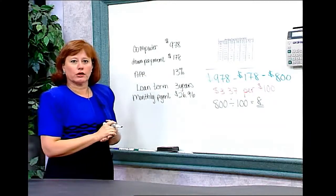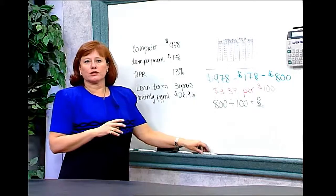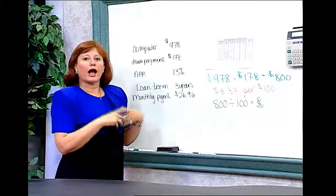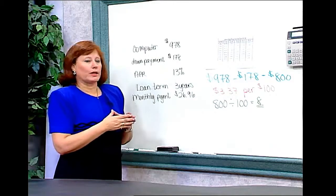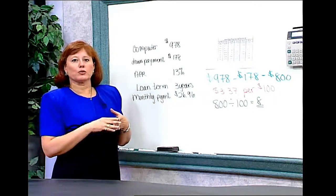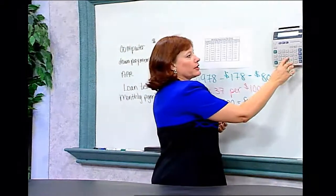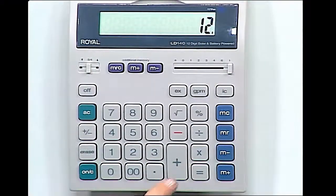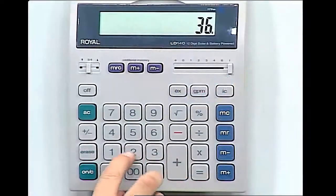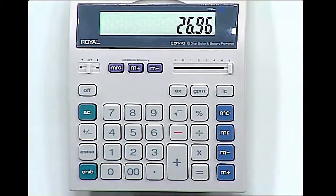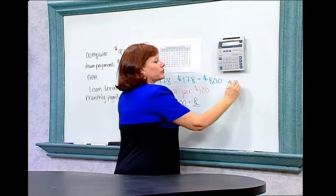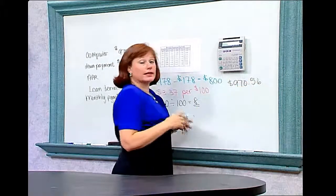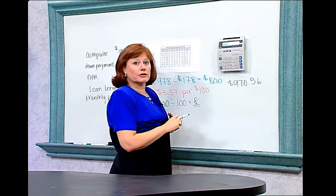She will pay $26.96 for each month of the loan. We need to figure out how many payments she'll make. She borrowed for three years, and there are 12 months in each year, so three years times 12 payments per year gives us 36 payments. Each payment is $26.96, so multiplying 36 months times $26.96, the total amount of the loan will be $970.56. At the end of three years, she will have paid back $970.56.